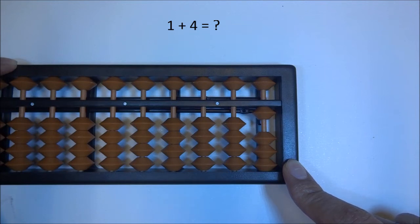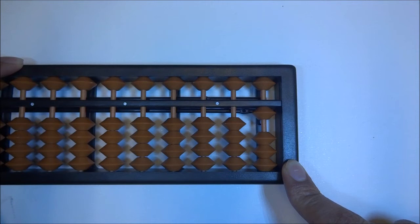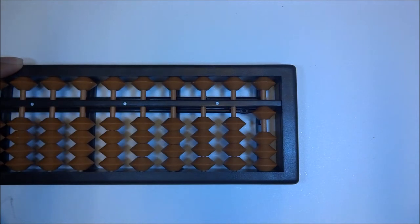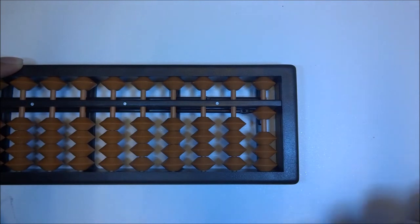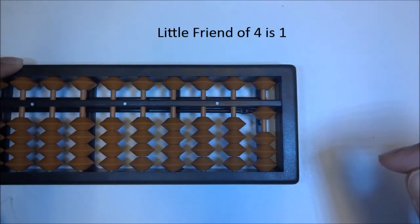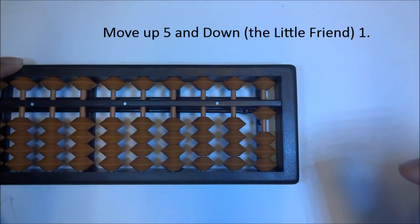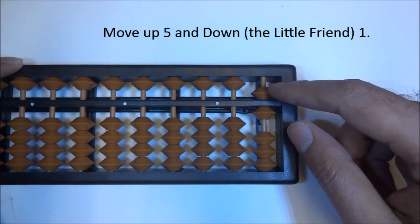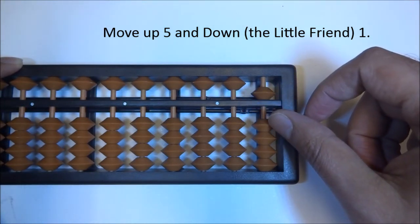Now let's go back to what we learned in our section of complements or little friends as we call them. So we need to move up 4. So now that we don't have 4 beads, here's what we're going to do. We're going to find a little friend of 4. So in order to move up 4, what we need to do is move up 5 and down 1. Little friend of 4 is 1. So our base being 5, up 5, down 1. The little friend of 4 is 1.